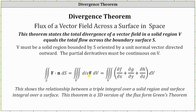The divergence of the vector field is equal to the partial of F with respect to X, plus the partial of G with respect to Y, plus the partial of H with respect to Z, where F, G, and H are the X, Y, and Z components of the given vector field. This formula shows the relationship between a triple integral over a solid region and a surface integral over a surface.